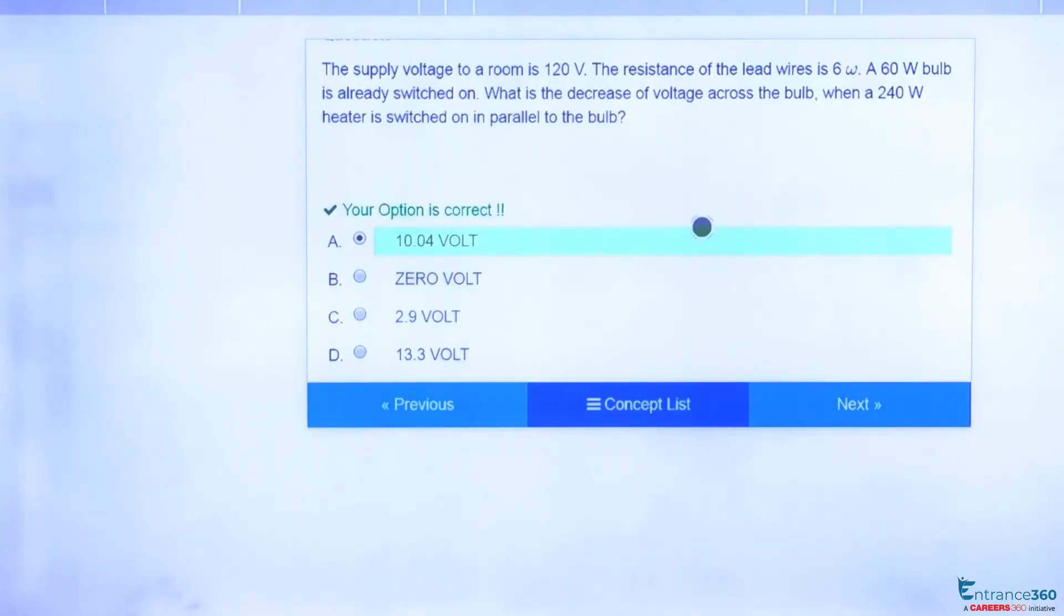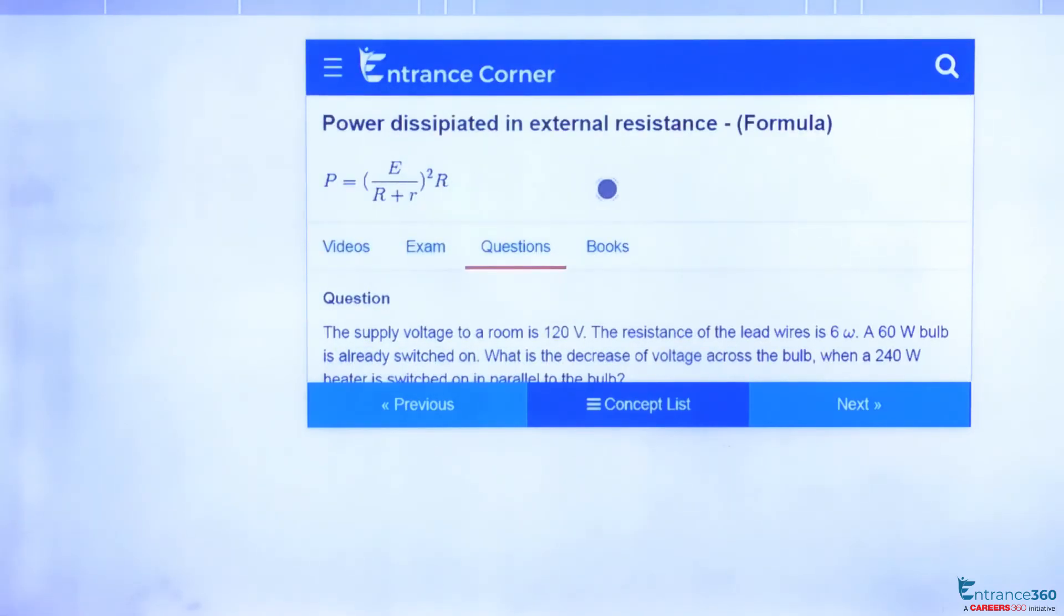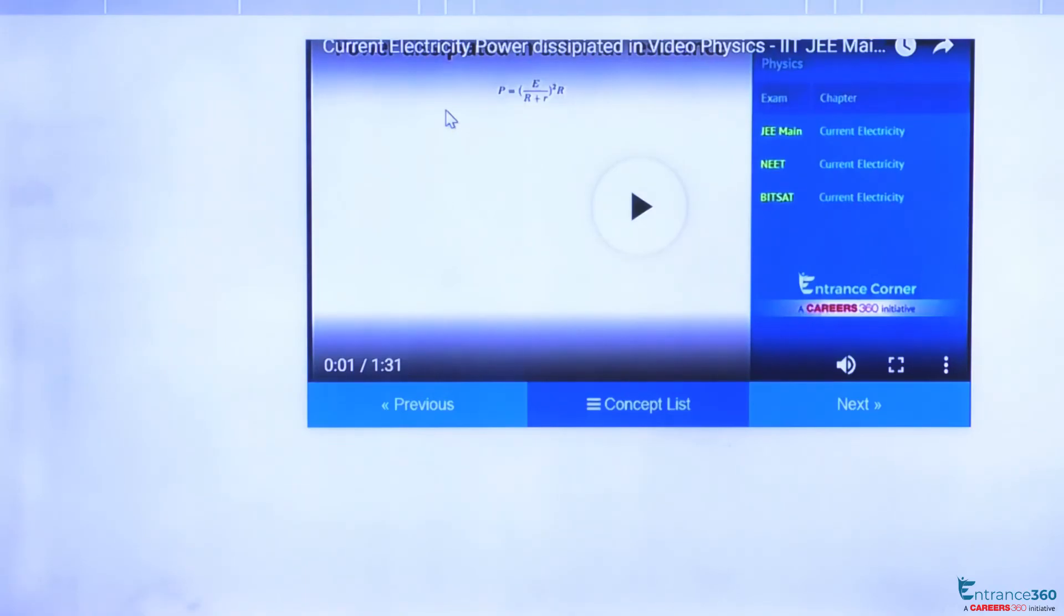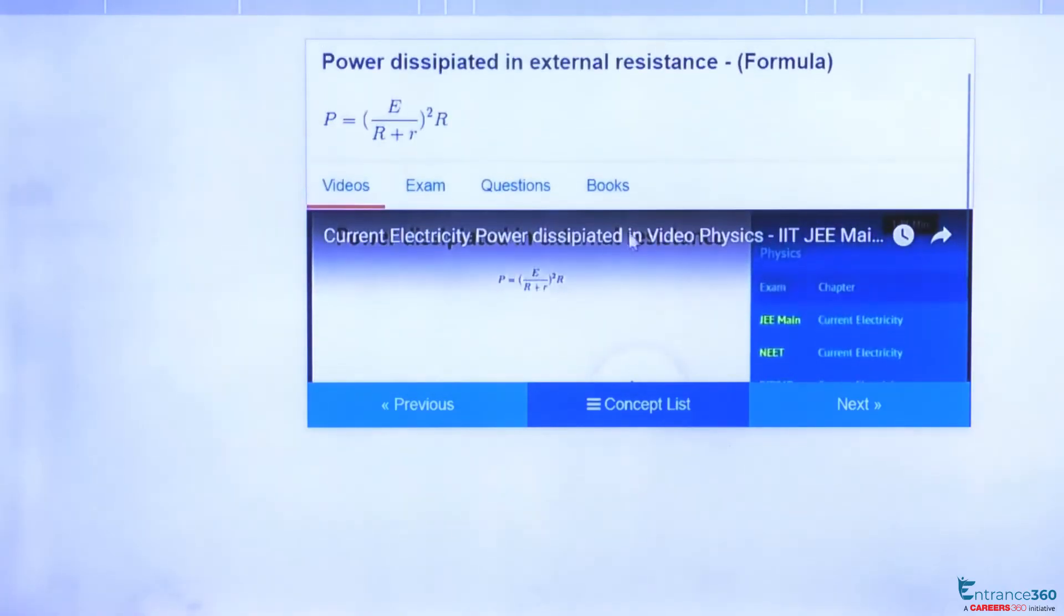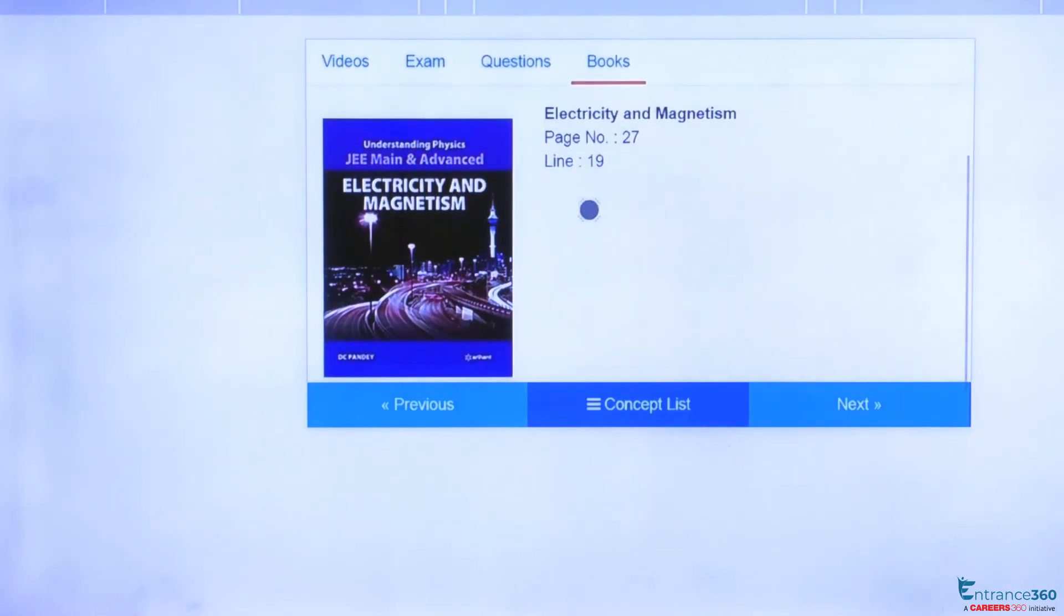So we get our answer as option A. The concept used here was power dissipated in external resistance. If you want to learn more about this concept, just go through our videos. This is our one and a half minute video, and you can also go through the referral book. You will get this concept in DC Pandey's electricity and magnetism book at page number 27 and line 19. Thank you students.